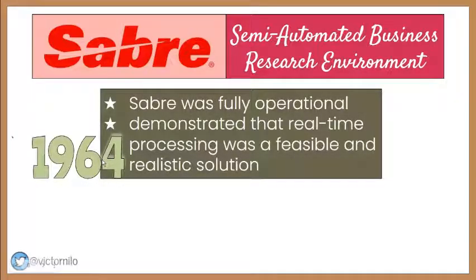American Airlines named its system Sabre, or Semi-Automated Business Research Environment. Sabre was fully operational in 1964, a year before any other airline had an installed reservations automation system. It demonstrated to the industry that real-time processing was a feasible and realistic solution to the passenger reservations problem.